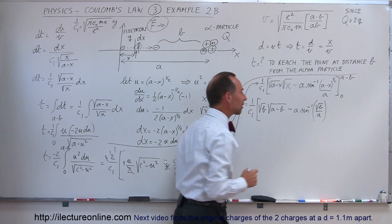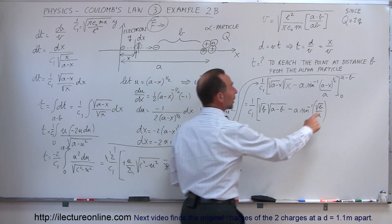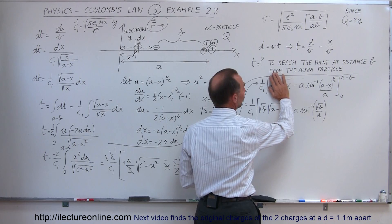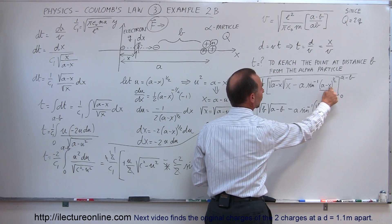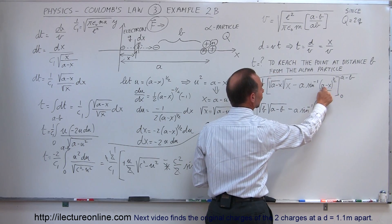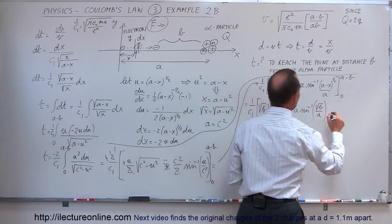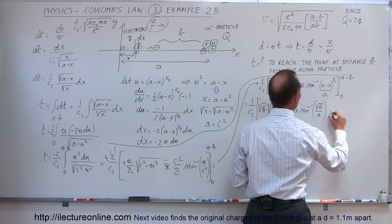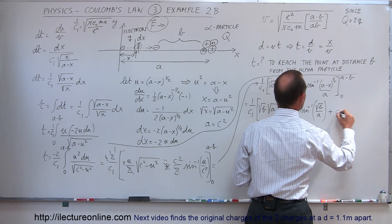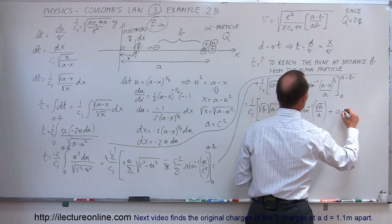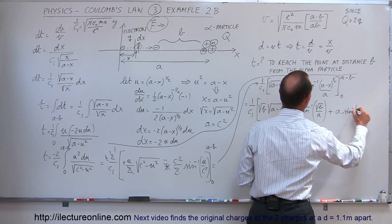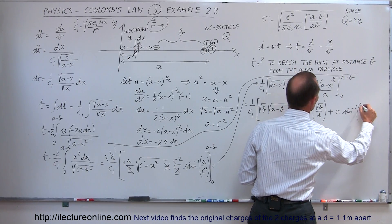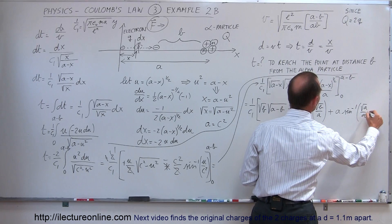When we plug in the lower limit, setting x equals 0: the first term goes to 0, and for the arc sine term we get plus a times the arc sine of the square root of a over a.